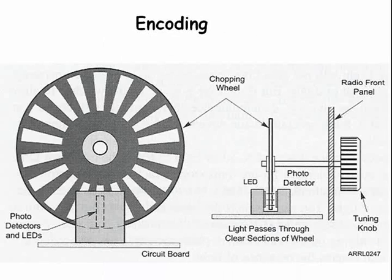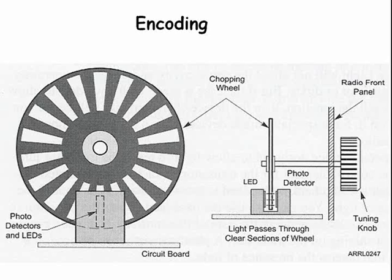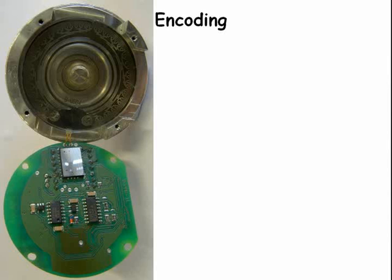One optoelectric device is an optical shaft encoder. It contains an array of optical emitters and detectors. A plastic disk with an alternating pattern of light and dark bands rotates between the encoders and detectors. Modern transceivers use such a device to control the VFO frequency. Here is an example of such an encoder.